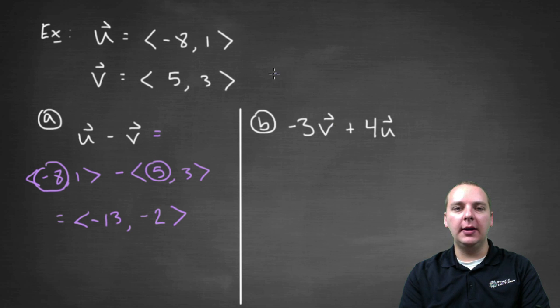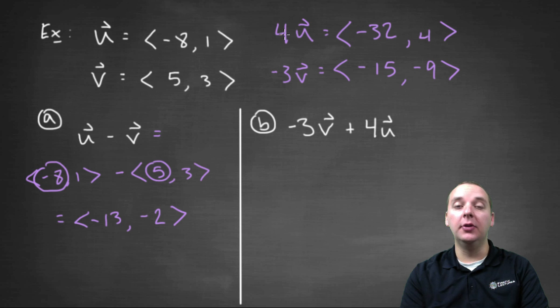So negative three times v, if you just look at v I think we can all agree that would be negative fifteen, negative three times five, comma negative nine, that's negative three times three. And then four u, four times vector u, that would be negative thirty two comma four. What I did there was again I just distributed the four through both of the components there.